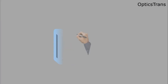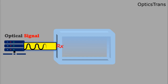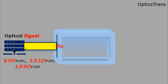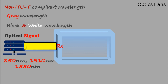Let's assume this is a transponder connected on one side with an SDH network using fiber connectivity. The SDH network sends an optical client signal, which is received on the client port of the transponder. These optical signals are normally on 850, 1310, or 1550 nanometer wavelengths. These are called non-ITU-T compliant wavelengths, or gray wavelengths, also referred to as black and white wavelengths.